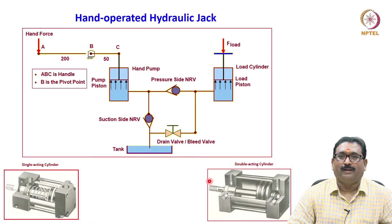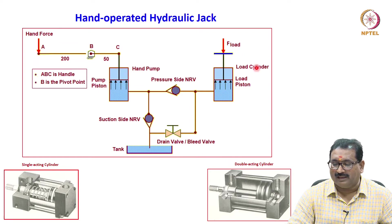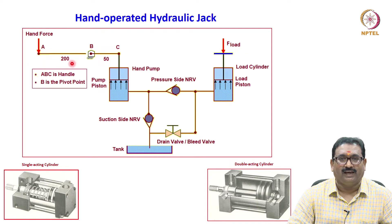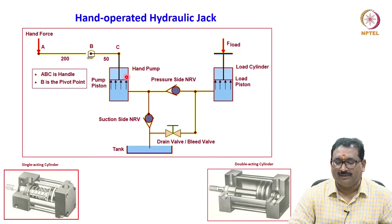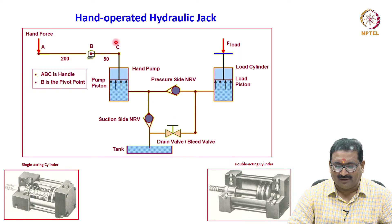Now I will explain the simple hand-operated hydraulic jack. The schematic diagram shows it consists of a hand pump and a load cylinder. The hand pump is connected to a hand lever with ratio 200 to 50. A, B, C is the handle and B is the pivot point. The hand pump is connected to a suction-side non-return valve, a tank, and a drain valve or bleed valve. These are the main components of the hand-operated hydraulic jack.